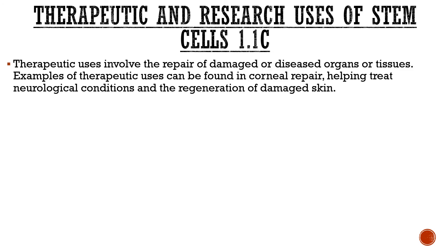The SQA distinguishes between therapeutic and research uses of stem cells. Therapeutically, stem cells can repair damaged or diseased organs — a good example is corneal repair if the front of the eye is damaged. They can also treat neurological conditions such as Parkinson's and Alzheimer's. Importantly, the regeneration of damaged skin is not the same as skin grafts — the SQA would not accept 'skin grafts' as an answer; you must say 'regeneration of damaged skin.'